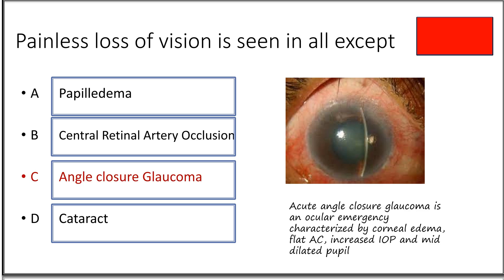The answer is angle closure glaucoma. Angle closure glaucoma typically presents with severe pain and is usually an ocular emergency. It is characterized by increased IOP, corneal edema, shallow anterior chamber, and a mid-dilated pupil.